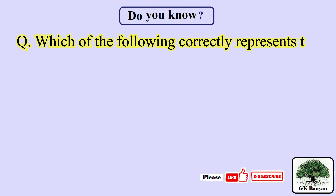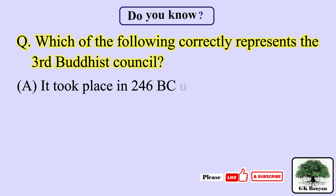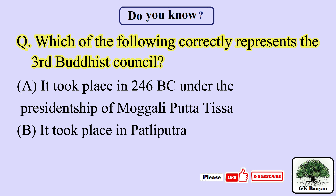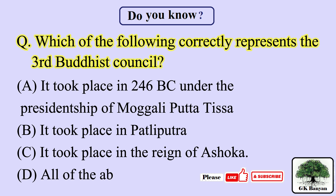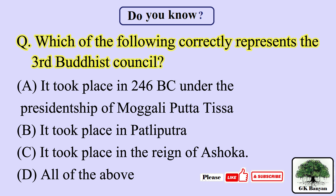Which of the following correctly represents the third Buddhist council? Your options are: A) It took place in 246 BC under the presidentship of Moggaliputta Tissa. B) It took place in Pataliputra. C) It took place in the reign of Ashoka. D) All of the above. Your time starts now — five, four, three, two, one. The right answer is...